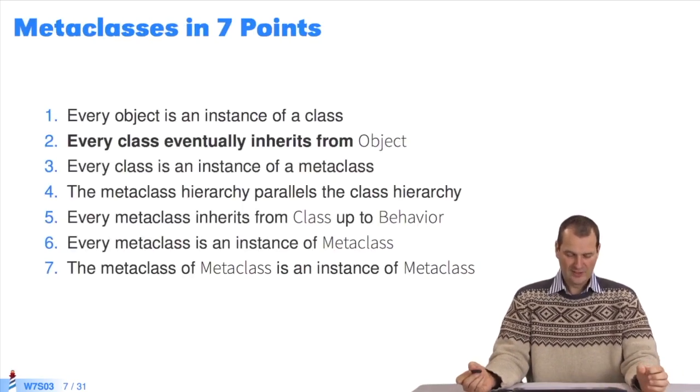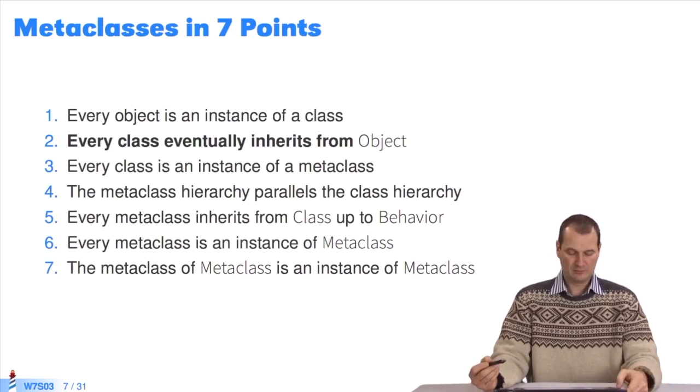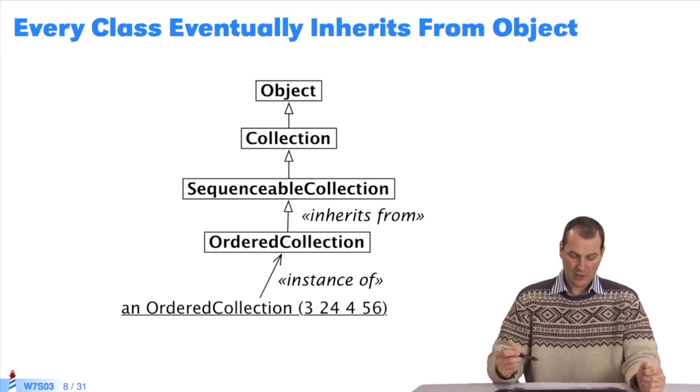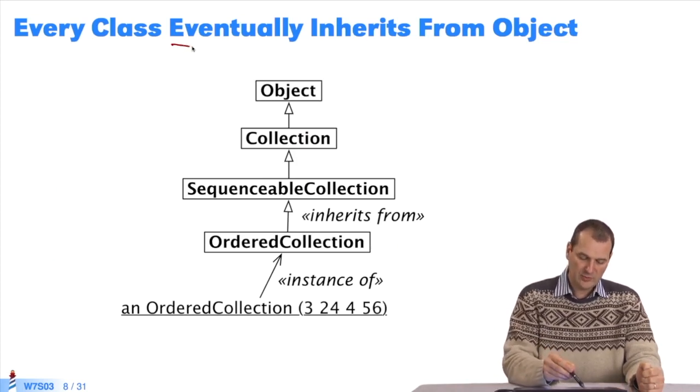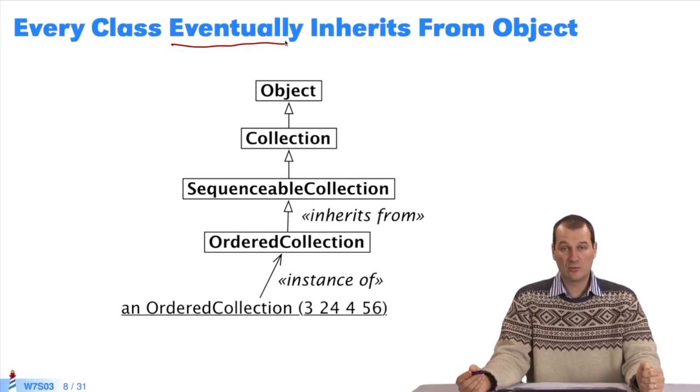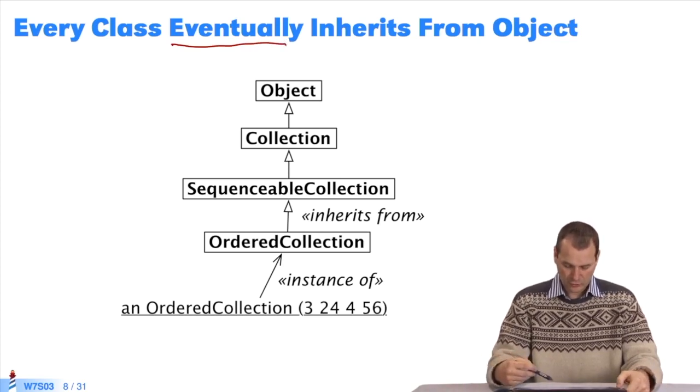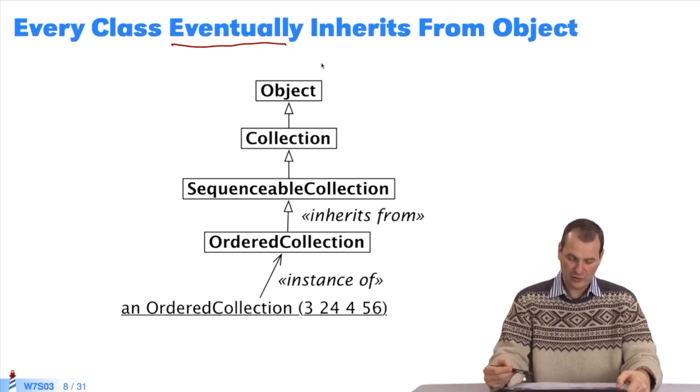The second point is that every class inherits from the object class. As we see here, ordered collection and upwards inherit ultimately from object. Just as a note for French speakers, eventually means ultimately. It's confusing. So, we have our inheritance graph that inevitably leads to object.